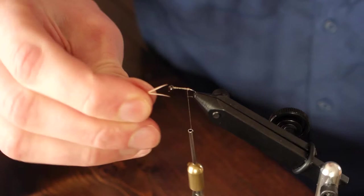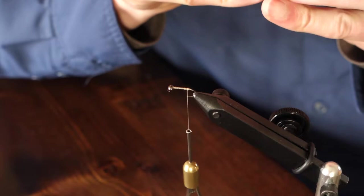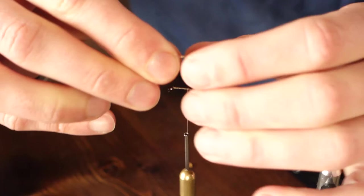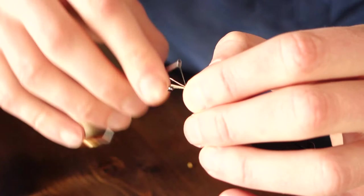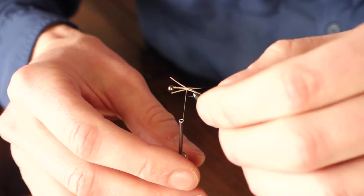Here we're using tan goose biot for the tails. Once I've got those lined up, I'm just going to lay them right on the top of the shank and push them over that bump. I'm going to make one loose wrap and then a second securing wrap. Once I've got them secured, I can wiggle them into the position that I want and pull them to the length that is appropriate or whatever length you like. I like the length of these tails to be about the length of the shank of the hook, maybe a little bit shorter.